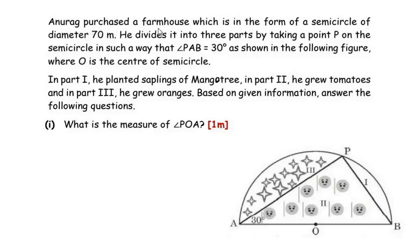Anurag purchased a farmhouse which is in the form of a semicircle of diameter 70 meters. He divided it into three parts by taking a point P on the semicircle such that angle PAB is equal to 30 degrees, where O is the center of the semicircle. In part one he planted mango tree saplings, in part two he grew tomatoes, and in part three he grew oranges.